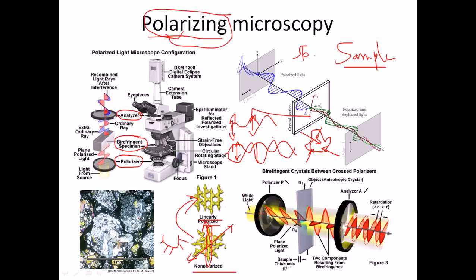We can also look at thin sections of cells or tissues, but polarizing microscopy is mostly used for birefringent specimens. Now let's talk about the phenomenon of birefringence. Looking at this picture: a light beam comes in, passes through a polarizer which cuts off all vibrations except one directional vibration of the electric vector, and then enters a birefringent object.